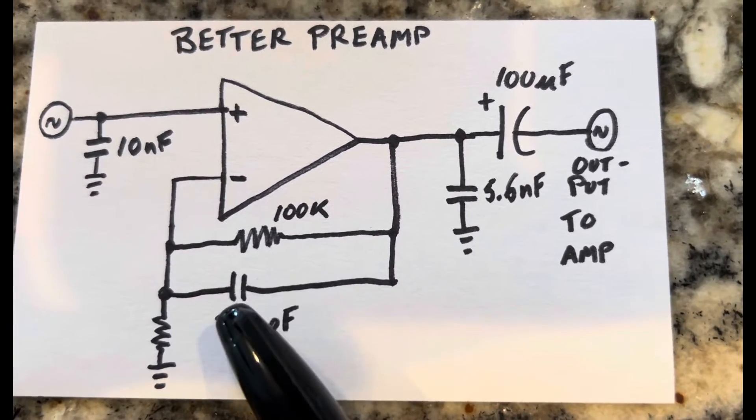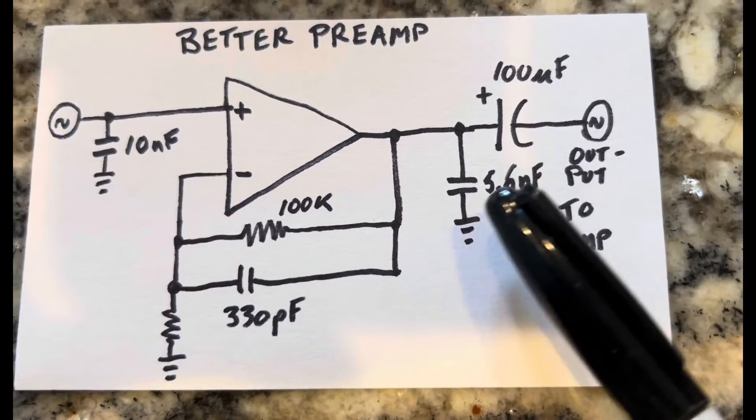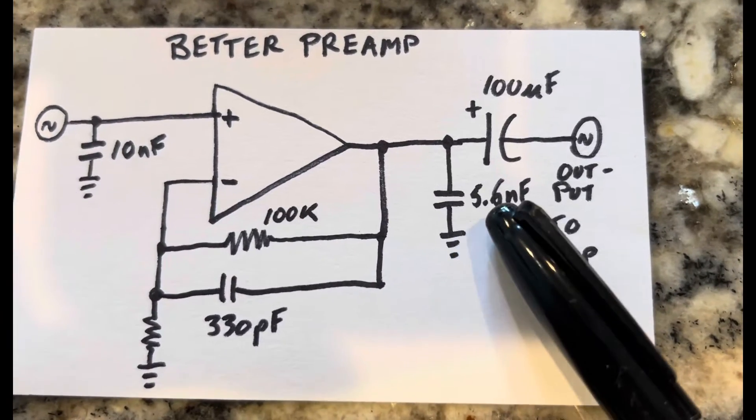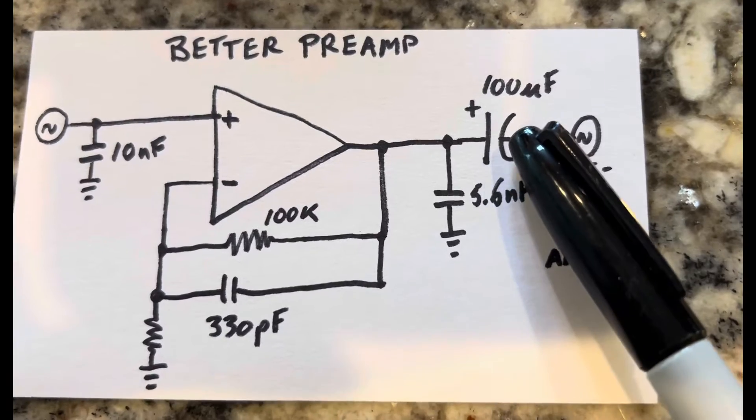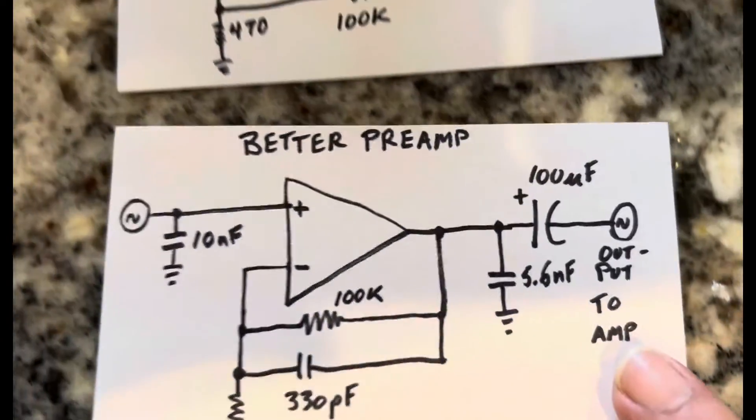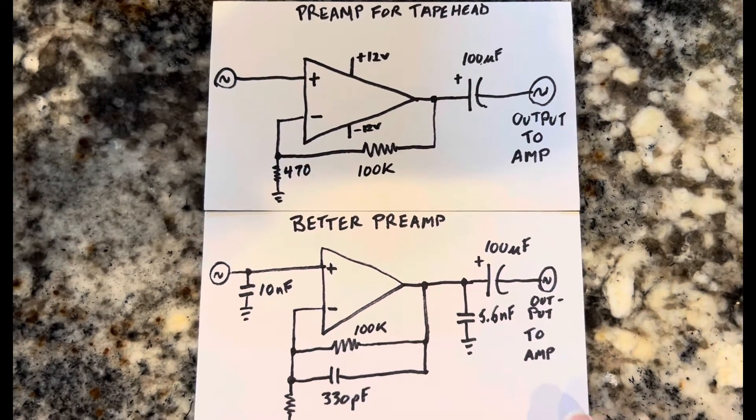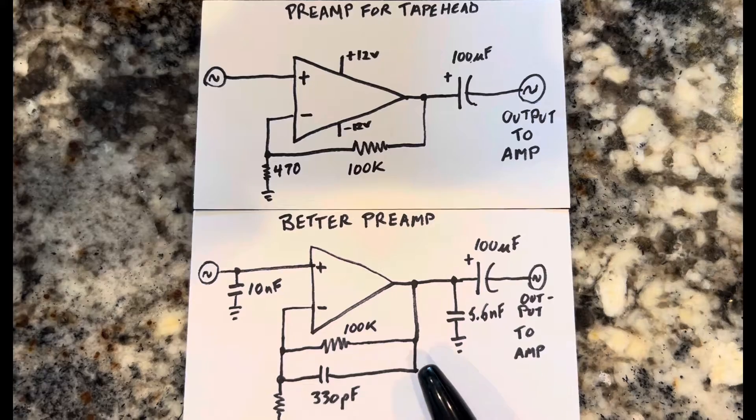So it provides a nice little base boost kind of situation here. And then adding an extra little one to filter out more noise, which is a 5.6 nanofarad capacitor before this 100 microfarad capacitor, and then the output goes to the amp. So that's the corrected preamp, and this is the better preamp circuit.